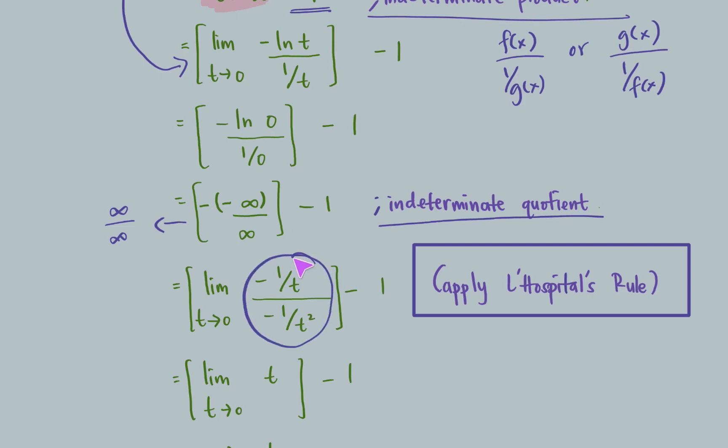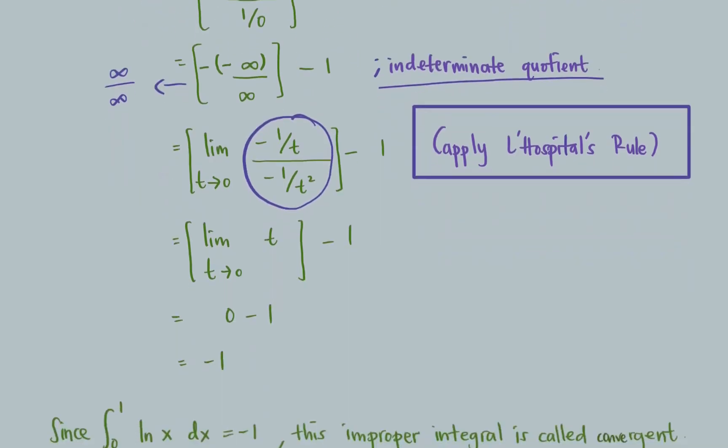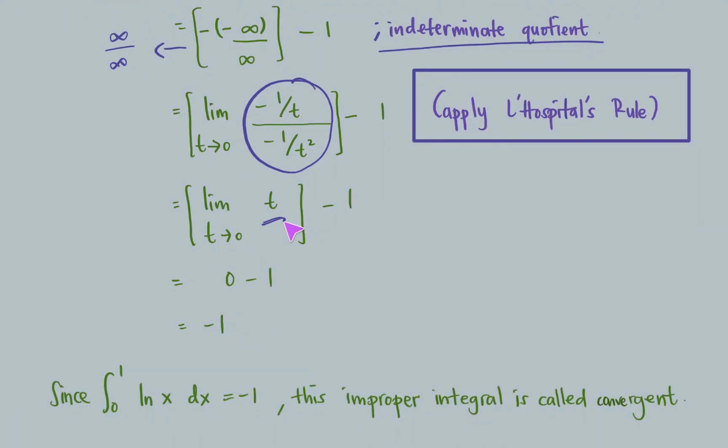Rearrange this improper fraction into proper fraction, and hence we have t only at the end. After that, substitute t approaches 0 in this function t. We have 0 minus 1, where it is equal to negative 1.